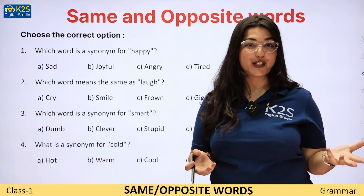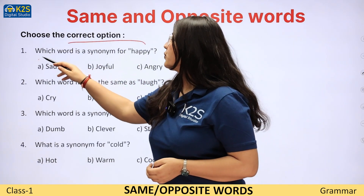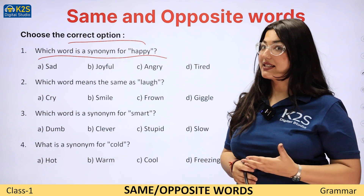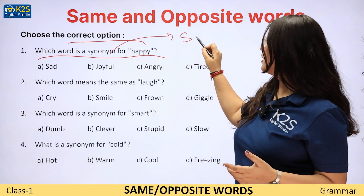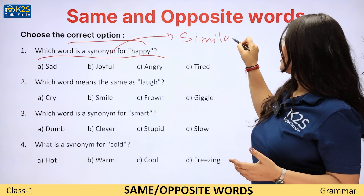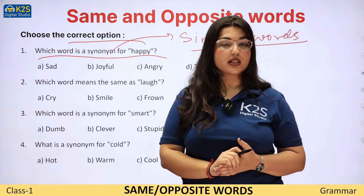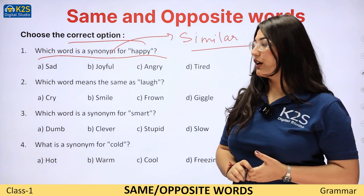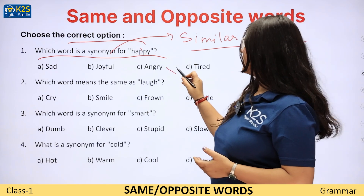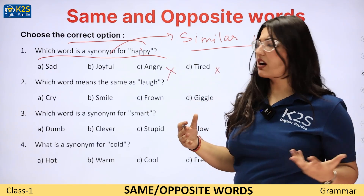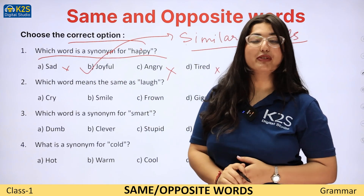Now let's do some exercises. Choose the correct option. Which word is a synonym for happy? Remember, S stands for synonym, S stands for similar. Angry — no, matlab gussa karna. Tired — thaka hona. Sad — udaas. So humare paas answer kya bacha? Joyful. Joy means when you are in a very fun mood.